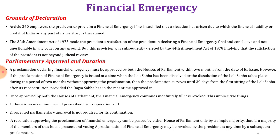Regarding parliamentary approval and duration of financial emergency: the proclamation must be approved by both houses of parliament within two months from the date of its issue. However, if the proclamation is issued when the Lok Sabha has been dissolved, or dissolution of Lok Sabha takes place during the two-month period without approving the proclamation, then the proclamation survives until 30 days from the first sitting of Lok Sabha after its reconstitution, provided the Rajya Sabha has in the meantime approved it.